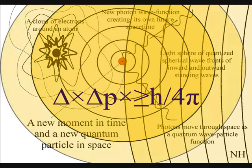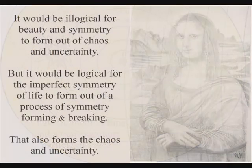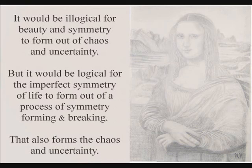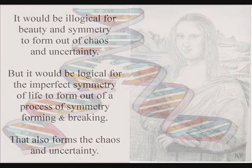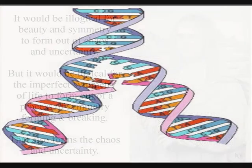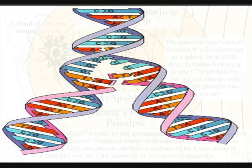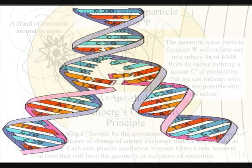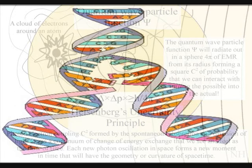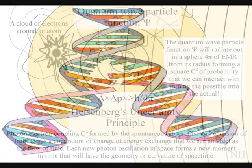This represents a process of spherical symmetry forming and breaking formed by the wave particle duality of light. When a hydrogen bond breaks photon energy will radiate out in all directions as a probability wave. Only when this quantum wave particle function comes in contact with an atom will it collapse into a particle forming a new hydrogen bond.